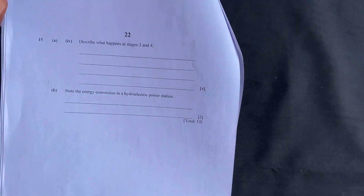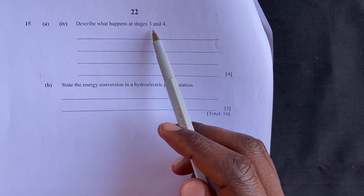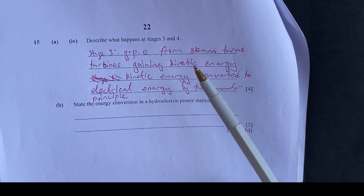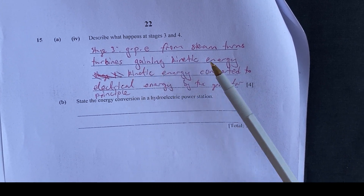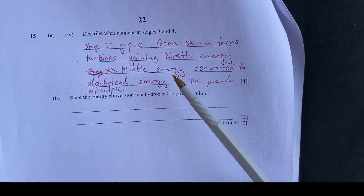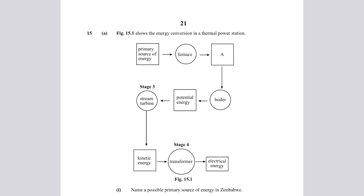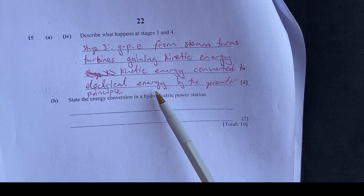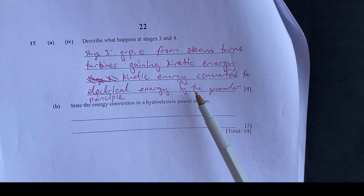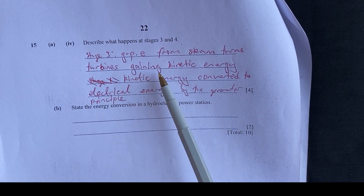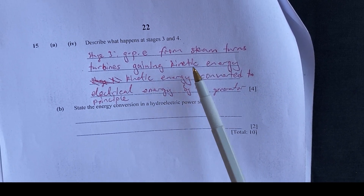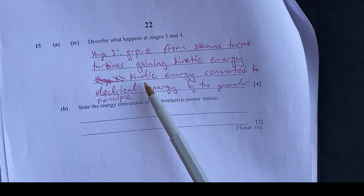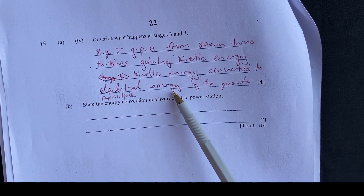The next question: Describe what happens at stages three and four. At stage three, the gravitational potential energy from the steam turns the turbines, gaining kinetic energy. At stage four, that kinetic energy is converted to electrical energy by the generator principle — the generator is found in the turbine, so when the turbine rotates, the kinetic energy is used to generate electricity.